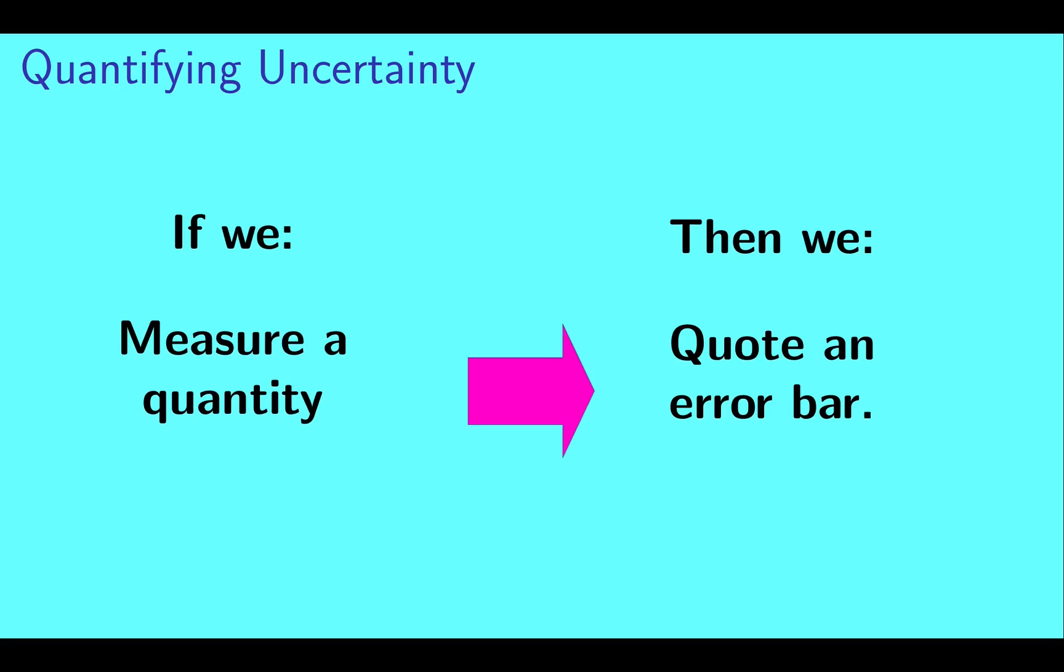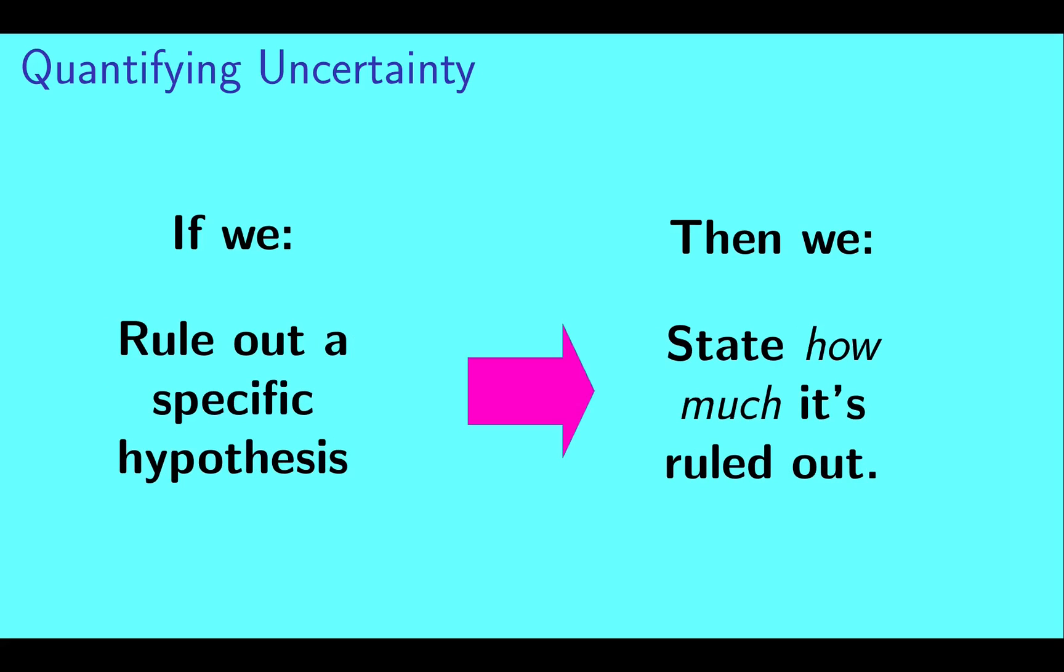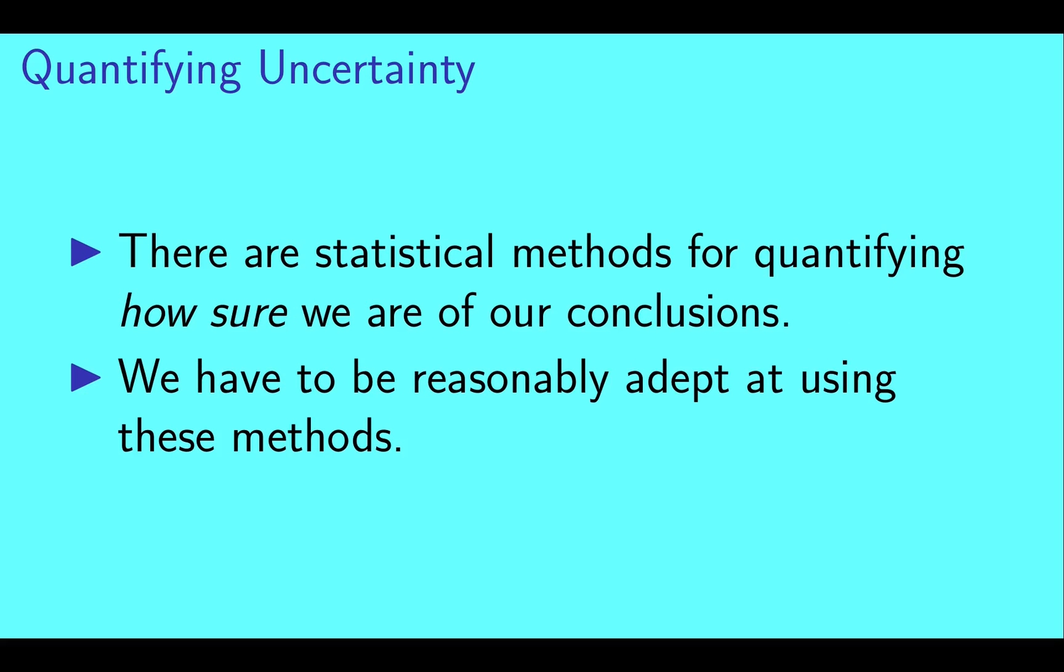If we measure a physical quantity, we quote an error bar. If we believe we've discovered a new particle, we state how strong the evidence for that discovery is. And if we rule out some specific hypothesis, we state how much it's ruled out by. In all cases, we need to report both our conclusion and how certain we are of it. There are statistical methods for quantifying just how sure we are of our conclusions, and as physicists, we have to be reasonably adept at using these methods.